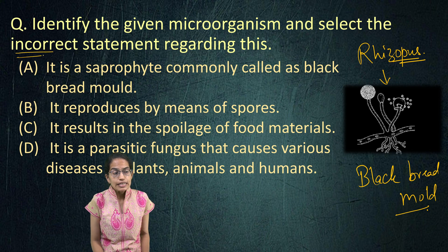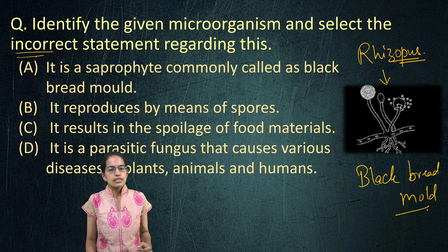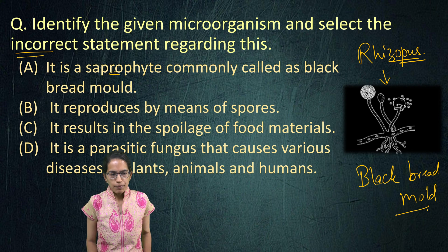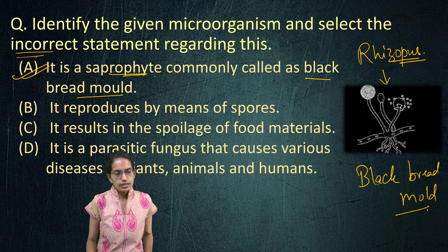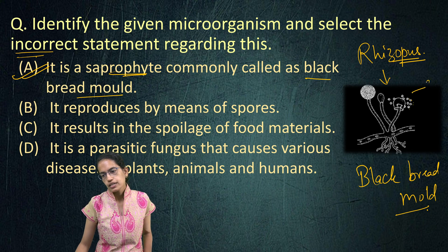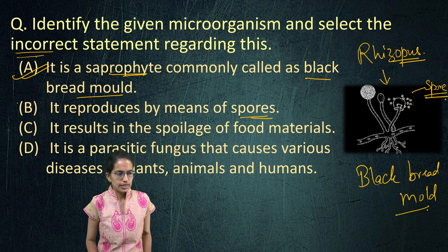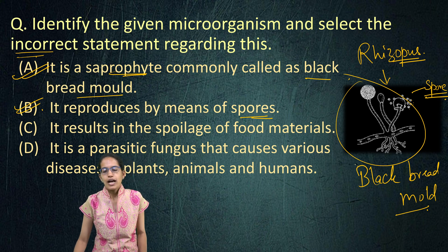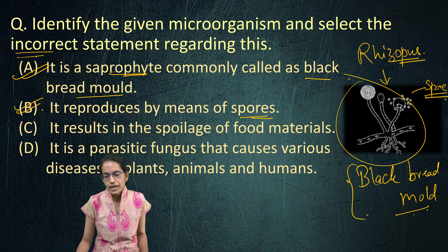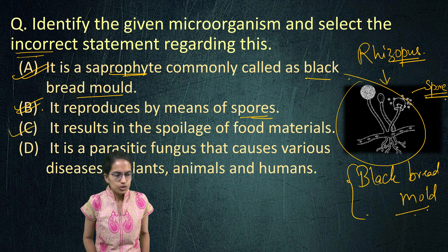You have to identify an incorrect statement about the black bread mold. It is a fungi — that's correct. It is a saprophyte — that is again correct. As already said, it is known as black bread mold, so A is correct. This fungi reproduces through spores, so reproduction through spores is again correct. And being a mold, it leads to spoiling of food — since it is called black bread mold, it would spoil the bread. So C again is correct.